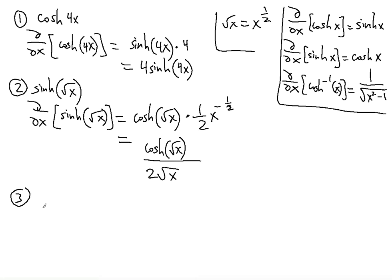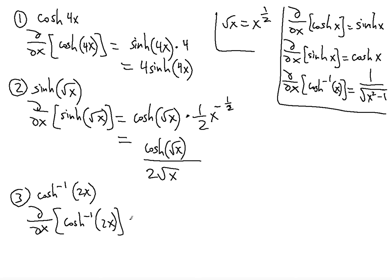The third example deals with finding the derivative of the inverse hyperbolic cosine — arc cosh — of 2x. Taking the derivative of arc cosh first, we apply the formula 1 over the square root of (x² − 1), but instead of x we substitute 2x, so it becomes 1 over the square root of (2x)² minus 1.